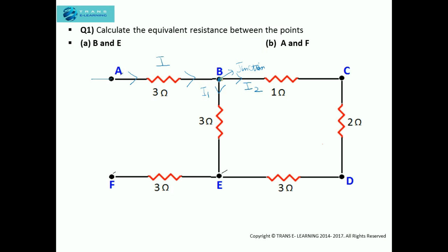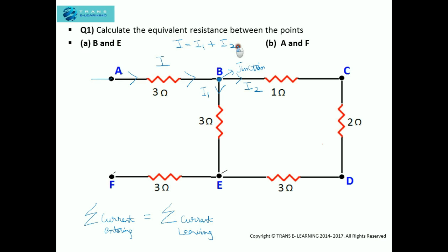Now, as the current is entering and dividing, we have to take into consideration Kirchhoff's current law, which states that the total current entering the junction is equal to the total current leaving the junction. Here at junction B, the current I is divided into I1 and I2, so I equals I1 plus I2.